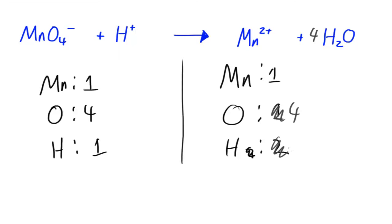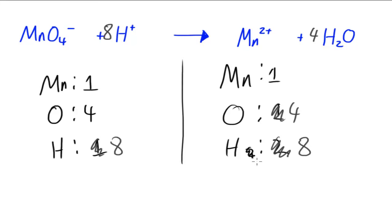Since I've multiplied H2O by four, we also have eight hydrogens on this side. So I want to increase the number of hydrogens on the left side by eight times, so I multiply H plus by eight. Now we have eight hydrogens on this side and eight hydrogens on the other side — eight and eight — so all the atom counts balance.